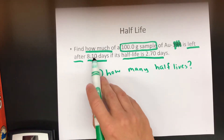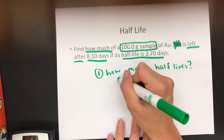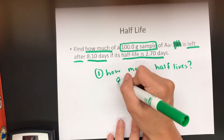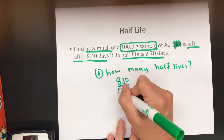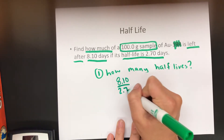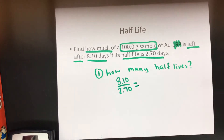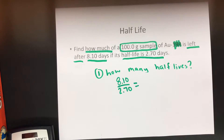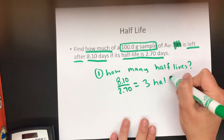If that's how many days went by and that's what one half-life is, all you're going to do is take 8.10 and divide it by 2.7, because your total time is 8.10 and one half-life is 2.7. That means three half-lives went by.